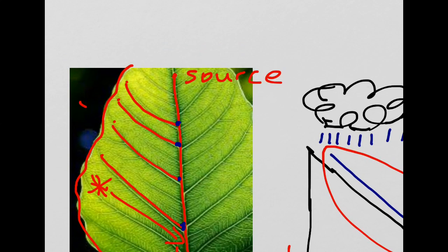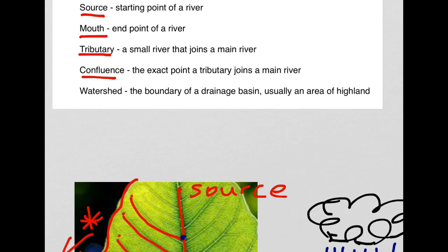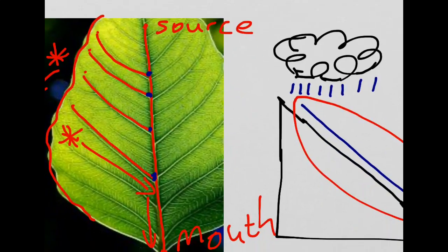If we have precipitation which falls on this side of the watershed, it will drain into additional river channels and make its way out to the sea via the mouth of a different river channel. Watershed, the boundary of the drainage basin, usually an area of high land.